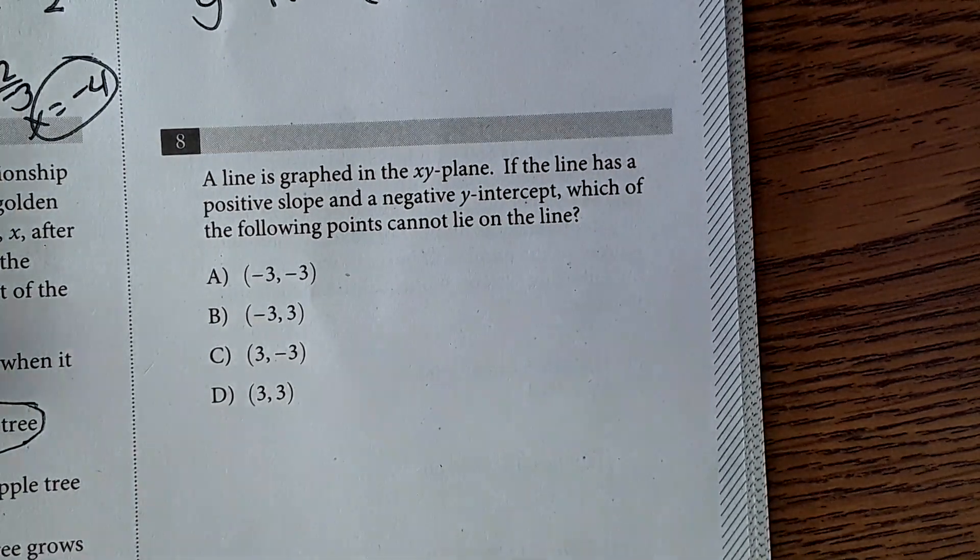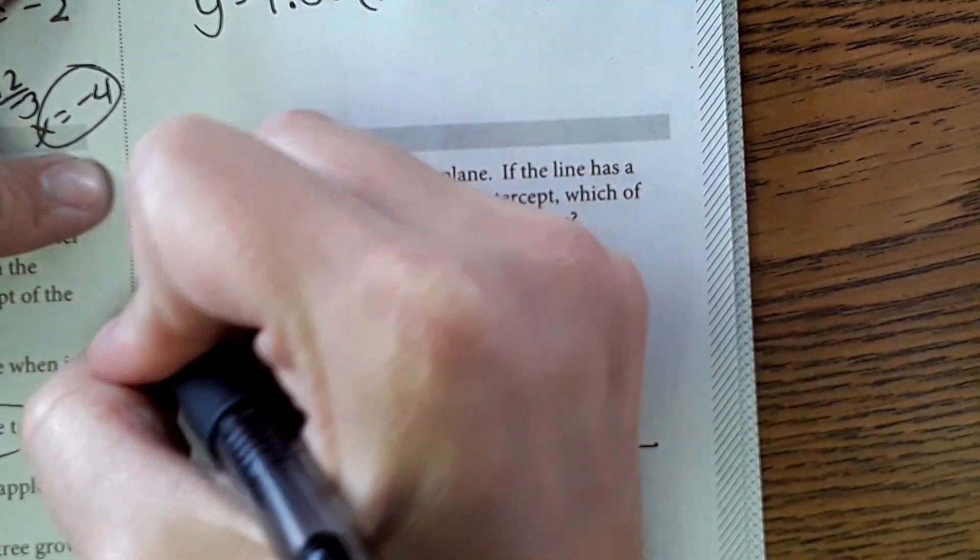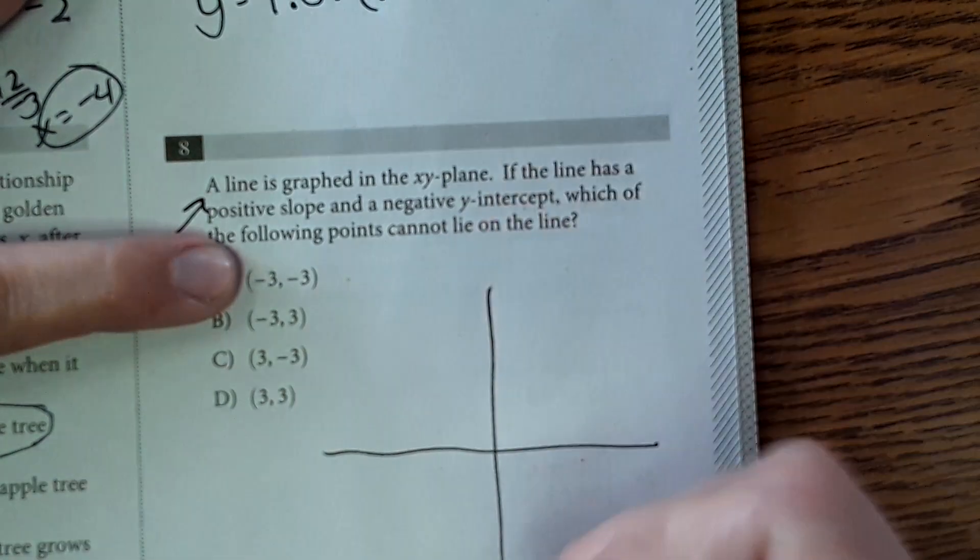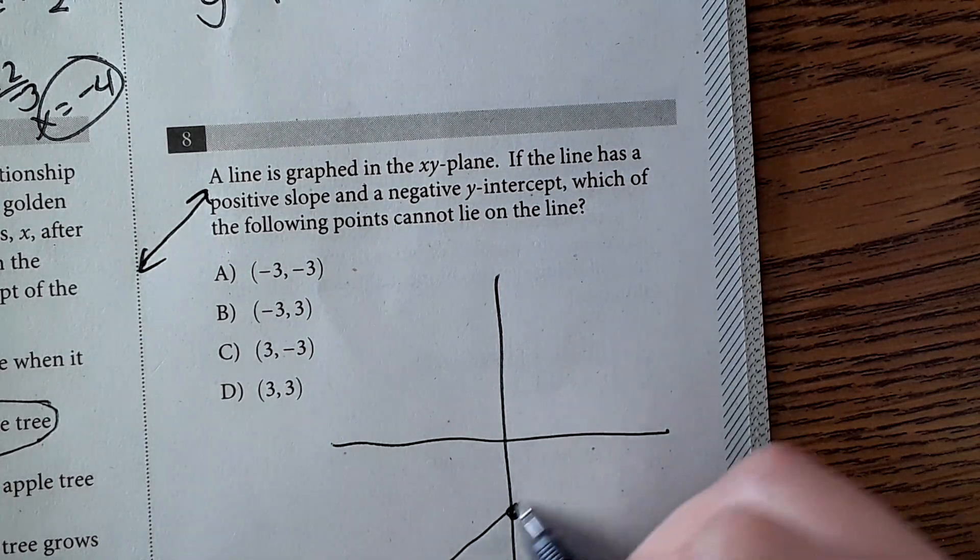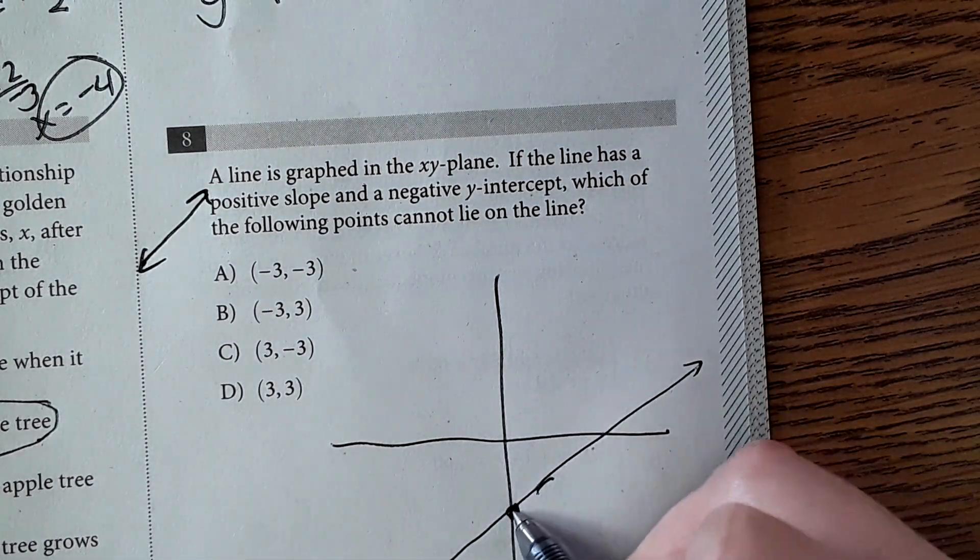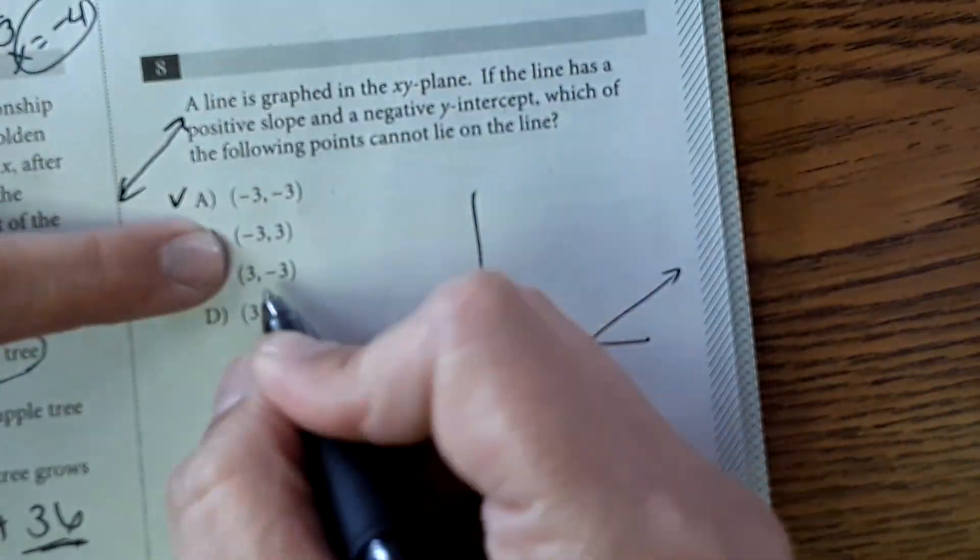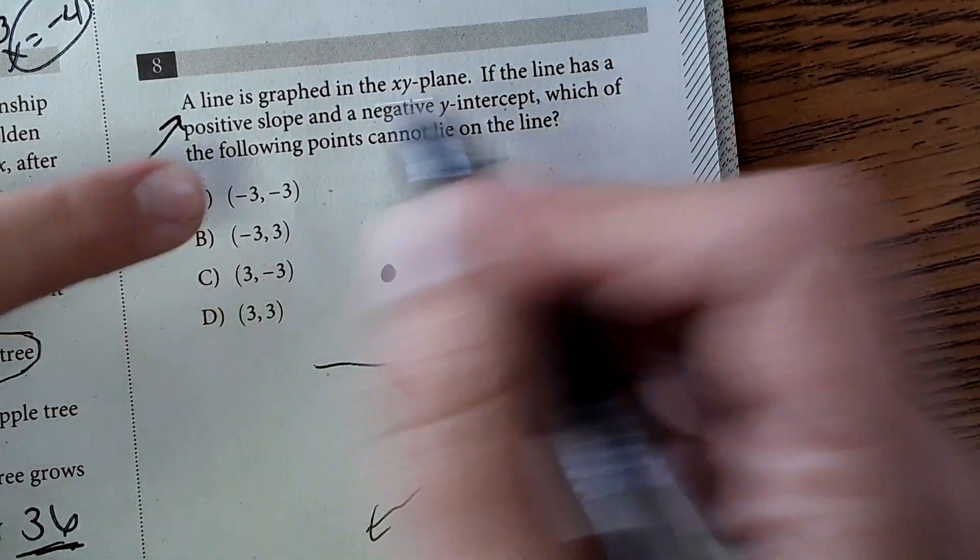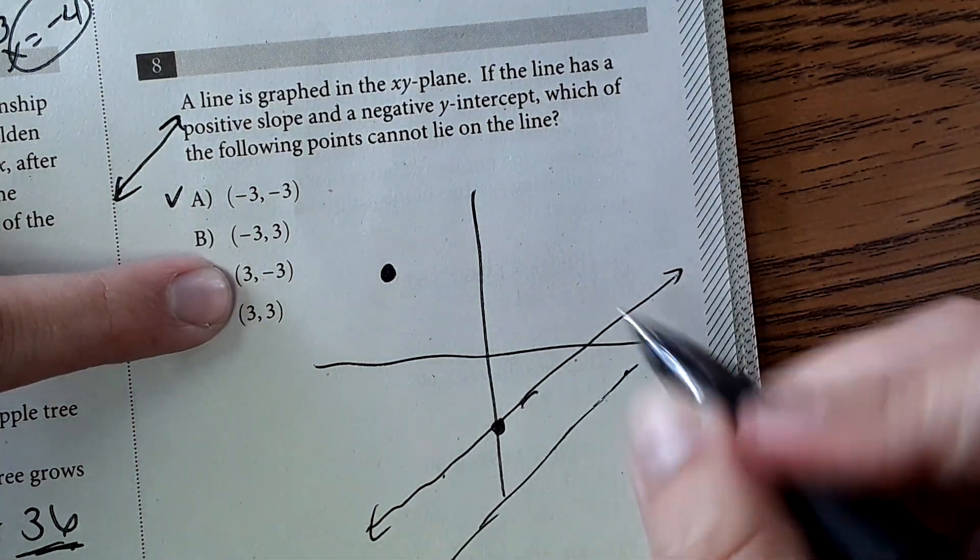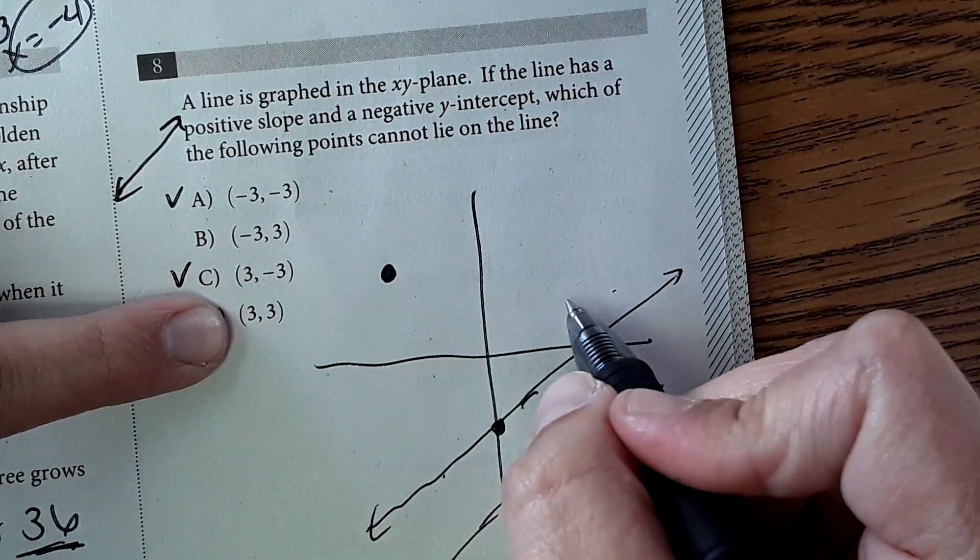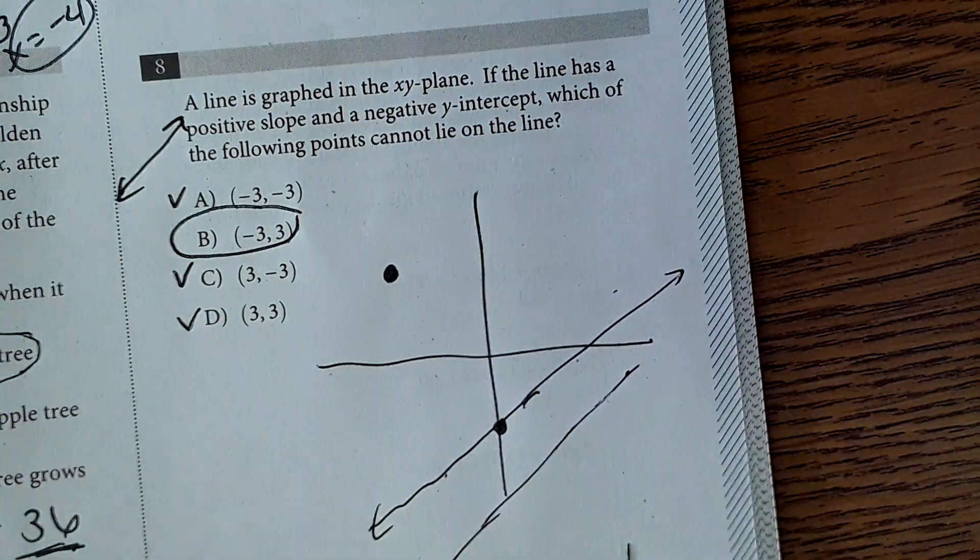Now moving on to number 8. A line is graphed on the XY plane, so I'm automatically kind of sketching out an XY plane. If the line has a positive slope, positive slope goes up and to the right. And a negative Y intercept would be down here somewhere. Which of the falling points cannot lie on the line? So let's say your line is right here, has a positive slope, negative Y intercept. I'm looking through each of the coordinates. Negative 3, 3, yes, that could land on the line. Negative 3, 3 up here, probably not, but I'm going to double check the other answers. 3, negative 3 could definitely lie on that line, especially if it was a little bit lower. That could lie on that line. And then 3, 3, yes, this point could lie on the line as well. So our answer is B. This point right here in the second quadrant would not lie on that line.